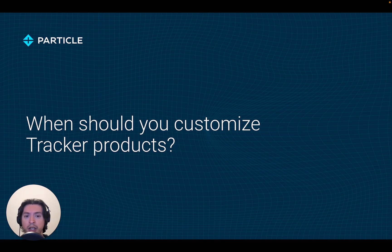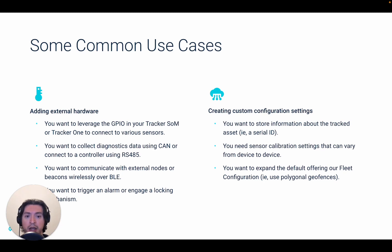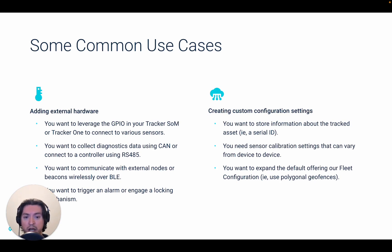First, let's talk about why you would want to add custom logic to your Tracker devices. There are many different reasons for which you might require customizing your Tracker devices, but these will typically fall under two main categories. The first is connecting external sensors — what we will typically call tracking plus. You want information coming off the CAN bus, a serial interface, or an external sensor, and added to the location data to provide meaningful context.